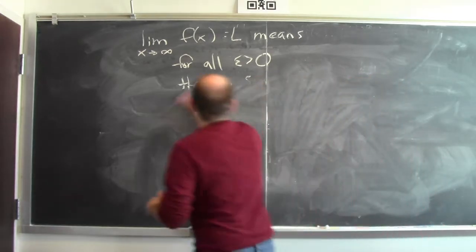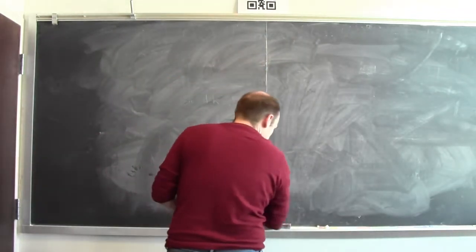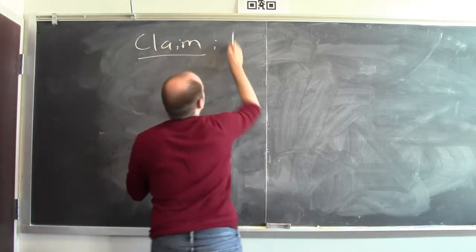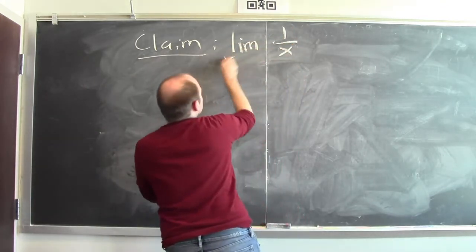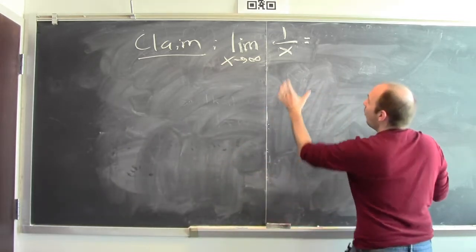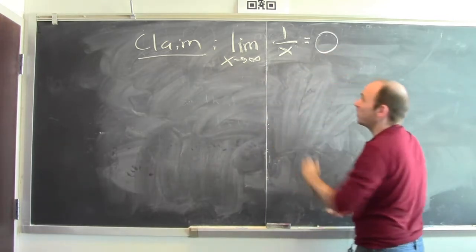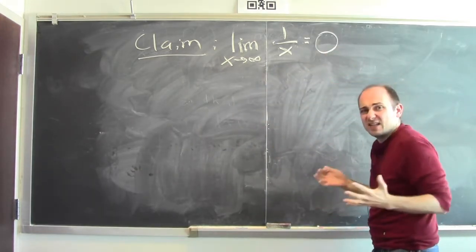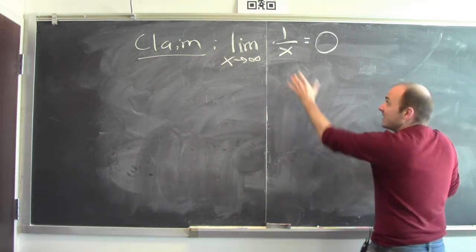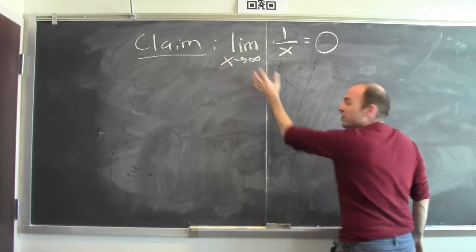Let's see an example of this working. Here's a claim: the limit of 1 over x as x goes to infinity. Well, what should this be? What is 1 over x getting close to when x is really big? It's getting close to 0. So I want to show that the limit of 1 over x as x approaches infinity is 0. What this really means is that I can make 1 over x as close as you want to 0 within epsilon, provided x is sufficiently large.